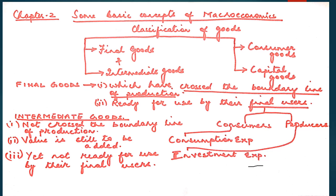Examples of intermediate products are raw materials and goods purchased for resale. Raw materials can be further processed during the year. For example, sugar is an intermediate product when it is used for making sweets, but sugar used by households for tea and coffee becomes a final product. The end use of the product is the deciding factor in classifying it as intermediate or final good.